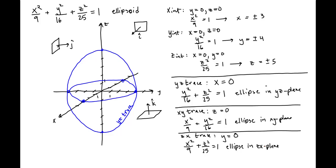Adding that to our sketch gives us a little bit more perspective. That ellipse in the ZX plane looks something like this. And now we've completed our sketch of an ellipsoid given by the quadric surface X squared over 9 plus Y squared over 16 plus Z squared over 25 is equal to 1.